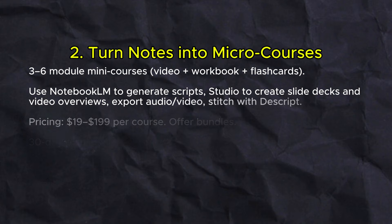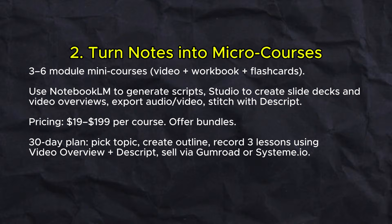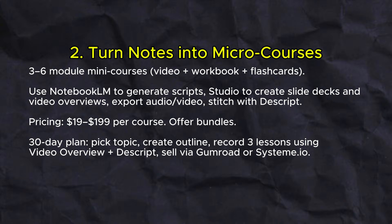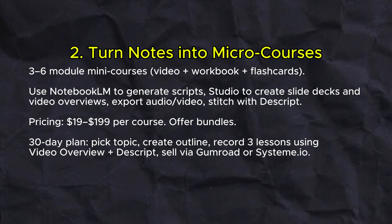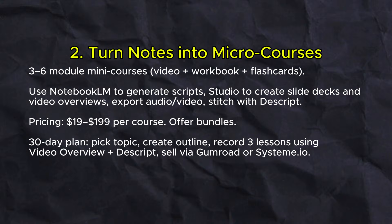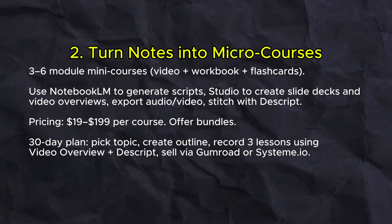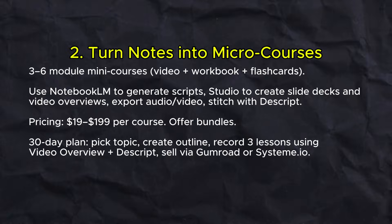The second business idea is to turn notes into micro courses — three to six module mini courses consisting of video plus workbook plus flashcards. Use Notebook LM to generate scripts, studio to create slide decks and video overviews, then export audio or video and stitch with the script. Price at $19 to $199 per course and offer bundles. For the 30-day plan: pick a topic, create an outline, record three lessons using video overview plus script, then sell via Gumroad or Systeme.io.